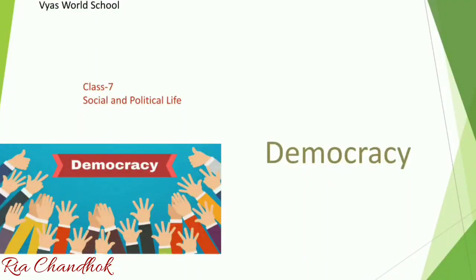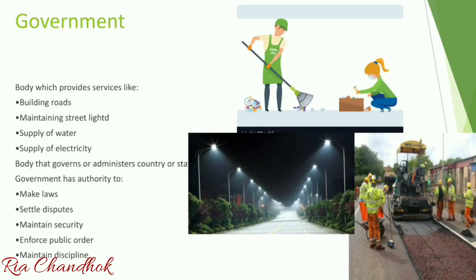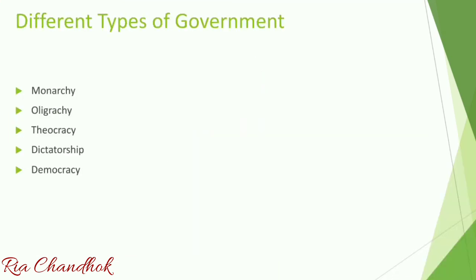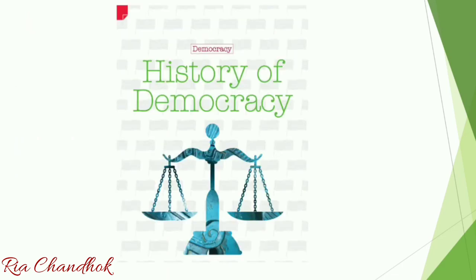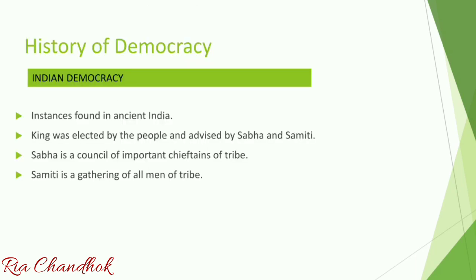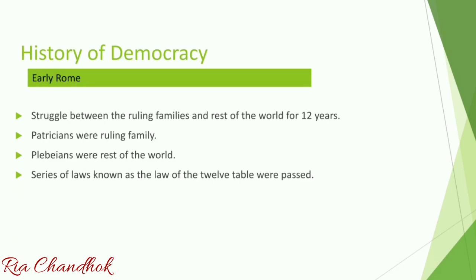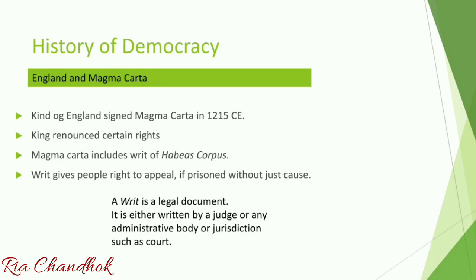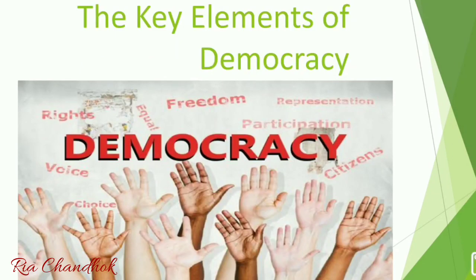Hello everyone. Till now in this chapter on democracy, we have seen what government is, the different types of government, the history of democracy — including Indian democracy, Athenian democracy, early Rome, England, and the Magna Carta. Now we will study the key elements of democracy. Democracy as a system of government is the most popular form of government in the world today.